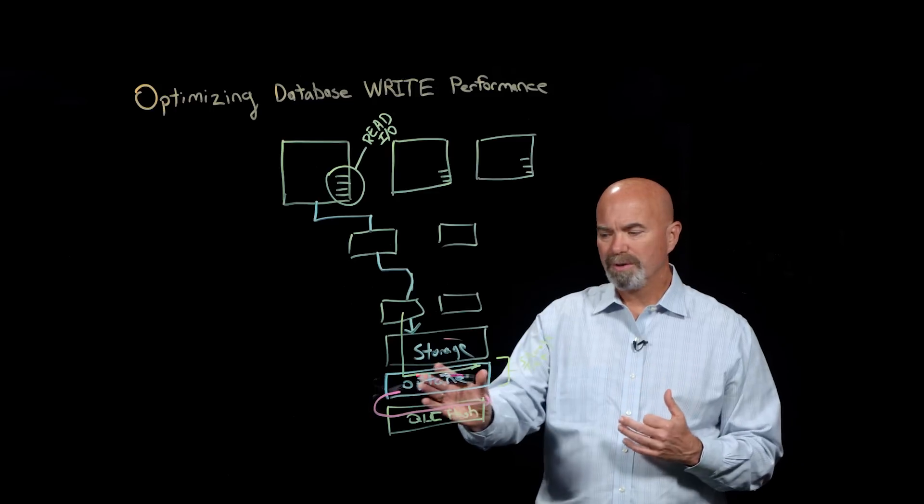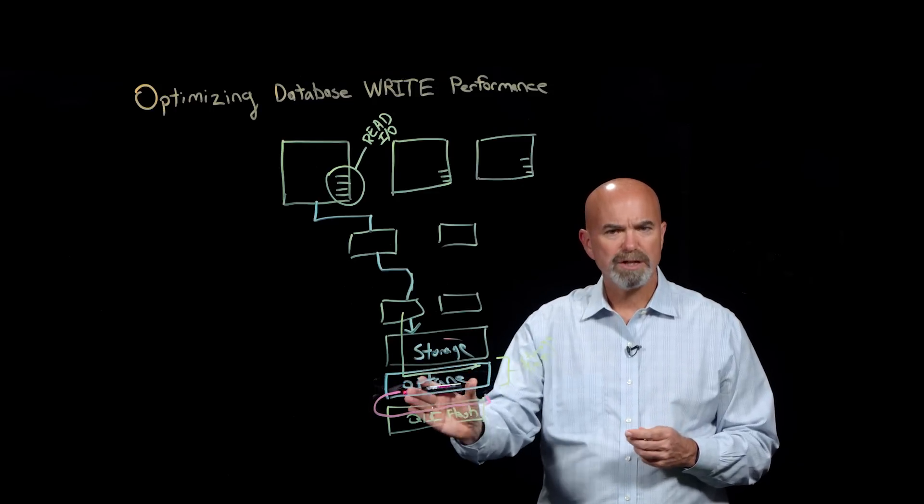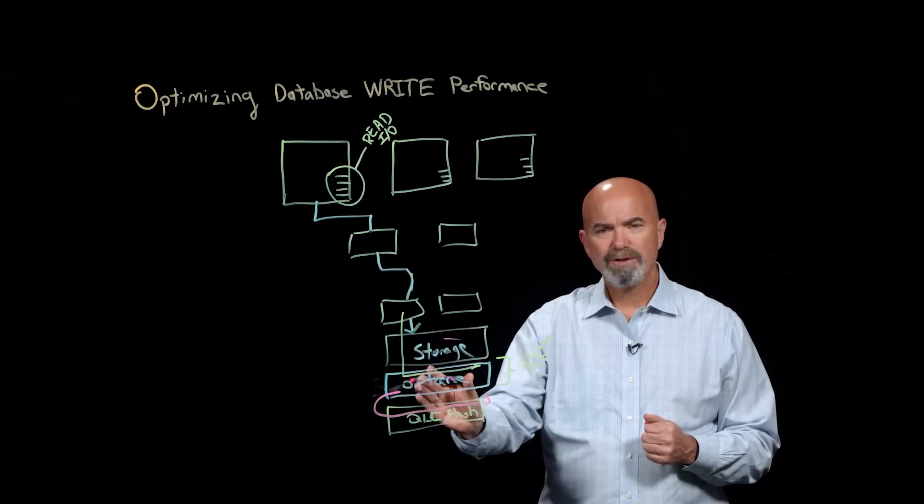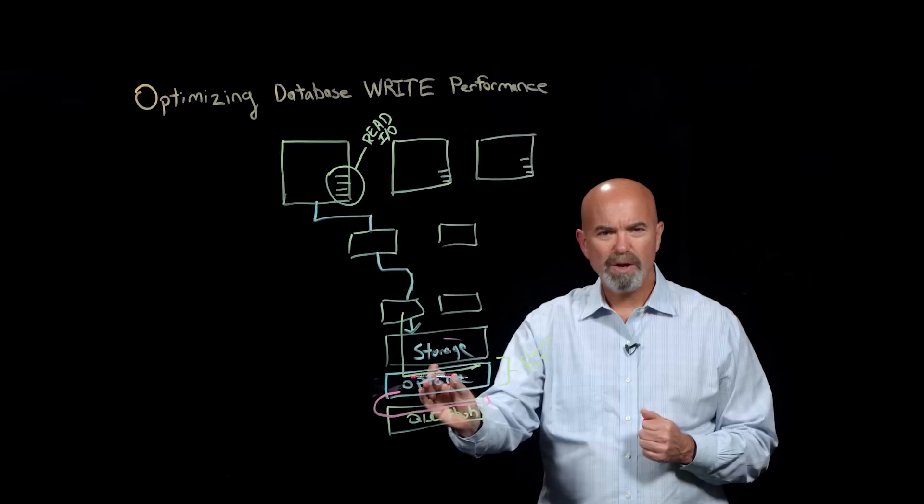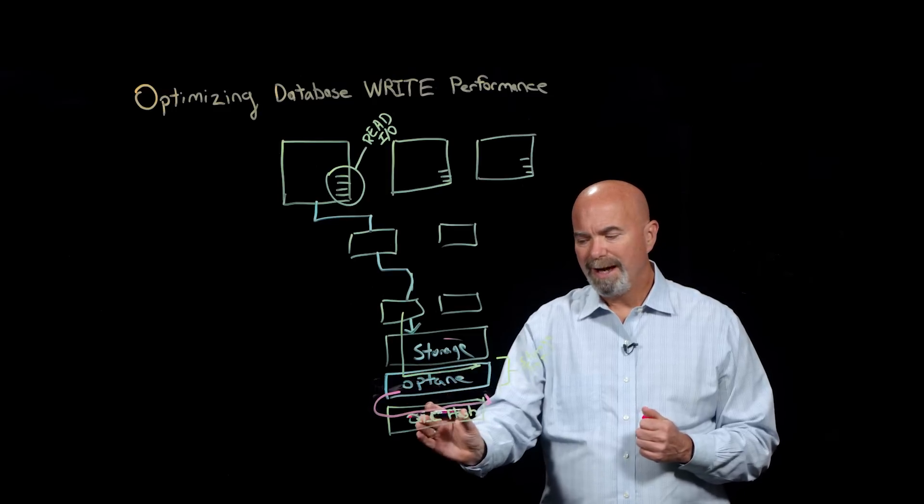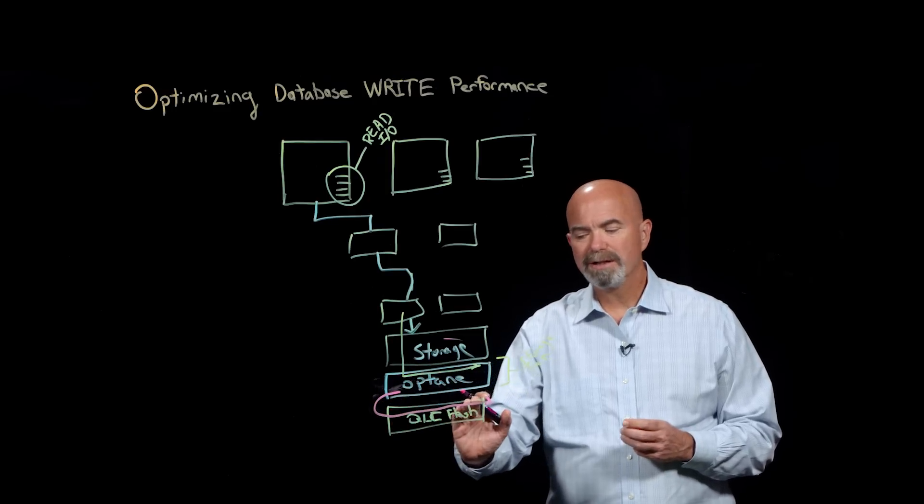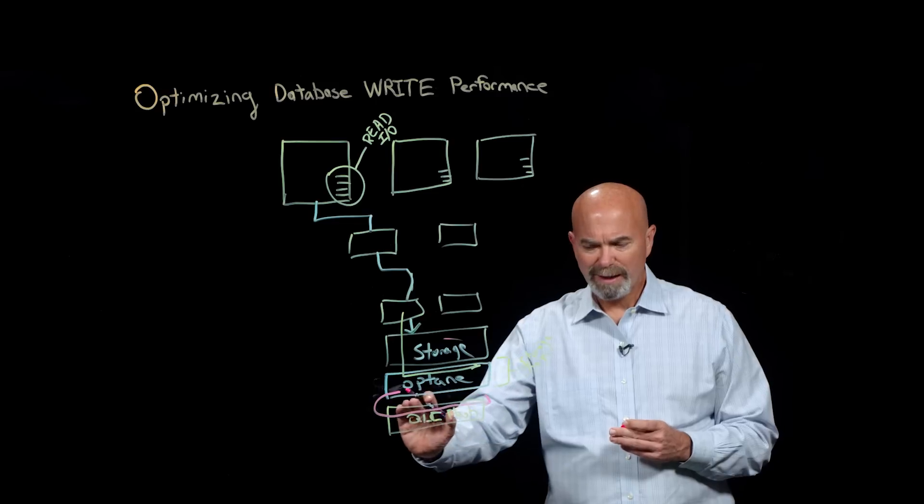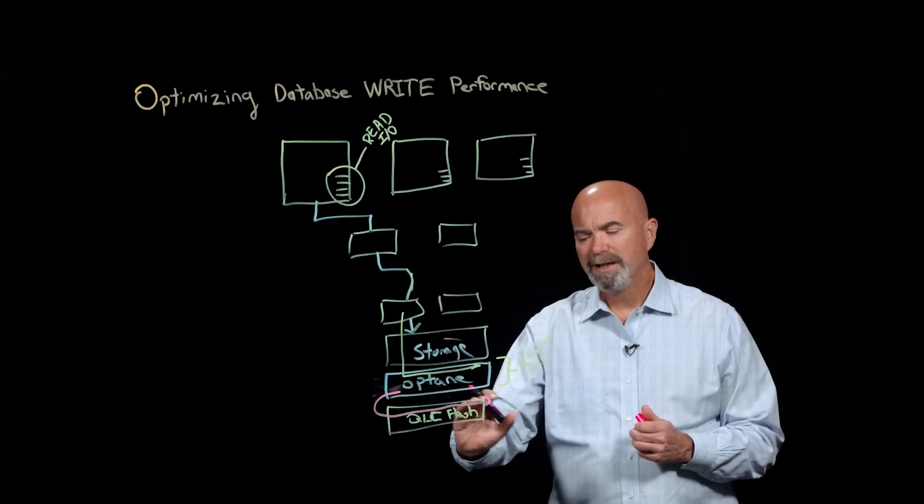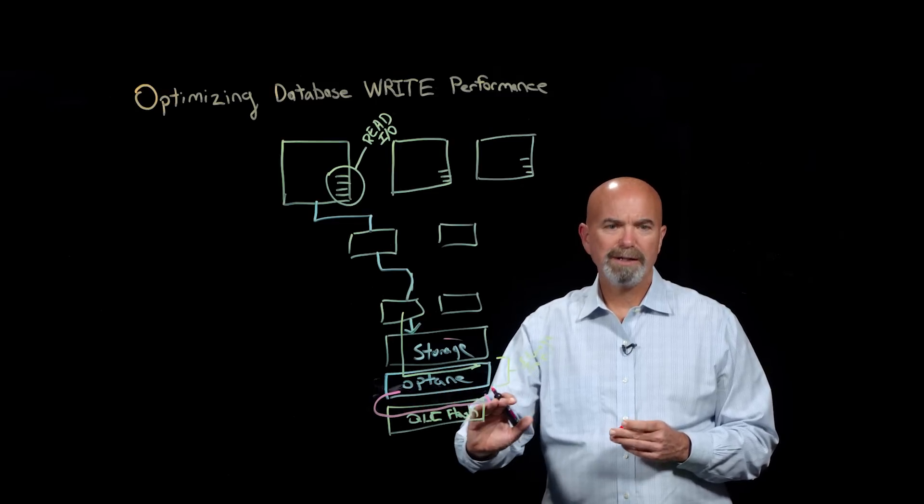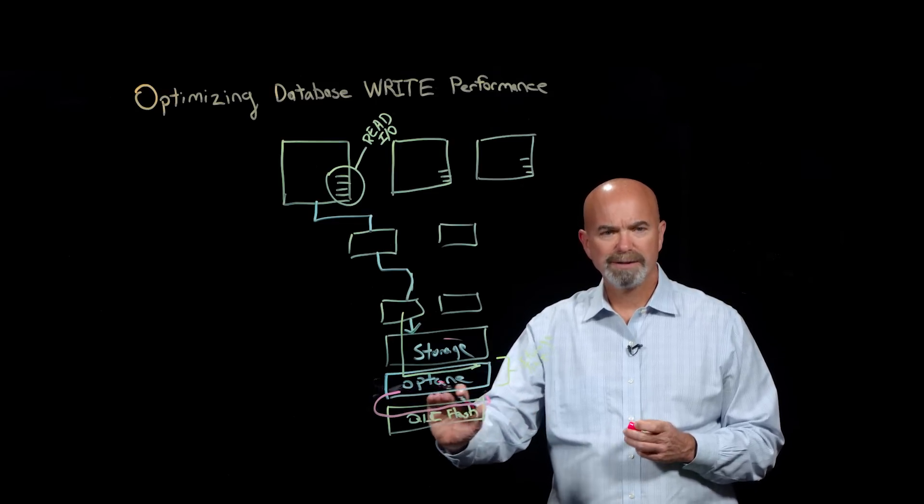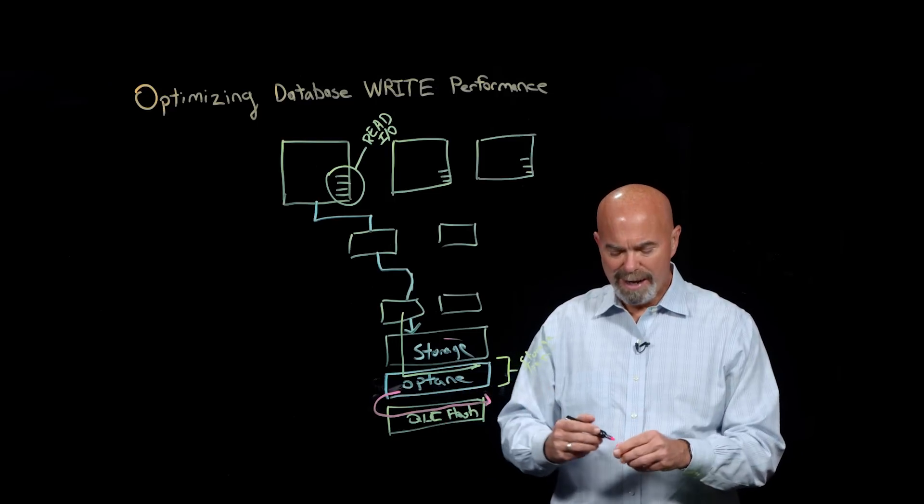And so we get the best of both worlds. We get Optane acting almost as a shock absorber for the write traffic coming in, but a very small amount so it's very affordable. And then we stage down to the QLC tier in a nice sequential write pattern. So that's the best way to write the QLC, it keeps the endurance high, it's less disruptive to the media.